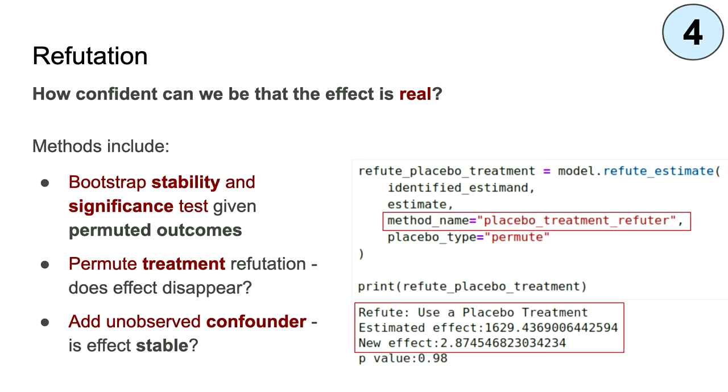The next and final step in the DoWhy paradigm is refutation. This means stress testing your model to see whether this is a real effect. You might not be sure whether this is a weak but legitimate effect or a strong effect that's biased or confounded in some way. DoWhy provides a number of tools to help you gain confidence and understand how statistically robust the effect is, all accessible through the refute estimate function. In this case, I've used a placebo treatment — we randomise all of the treatments but keep the outcomes and all other variables the same. Because we've randomised the treatment, we'd expect the effect to disappear. And fortunately it does: the effect goes down from $1,629 to just $2. So it's pretty much gone.